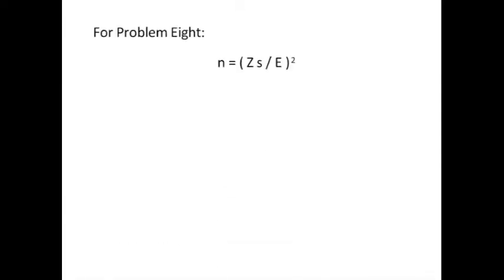The problem goes something like this. n is equal to Z times s divided by E, and all of that quantity squared. Now in problem 8 that I posted out there for you, n is equal to 1.96 times 0.4, all of that divided by 0.1 quantity squared.